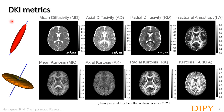After fitting the diffusion and kurtosis tensors on all data voxels, DKI can be used to extract metrics from both tensors. This includes all DTI measurements such as mean diffusivity, axial diffusivity, radial diffusivity, and fractional anisotropy. DKI also provides novel measurements from the kurtosis tensor: mean kurtosis as the average across all directions, axial kurtosis along the principal direction of the diffusion tensor, radial kurtosis as the average of perpendicular directions to the main axis, and the anisotropy of the kurtosis tensor — which carries different information from the diffusion tensor.